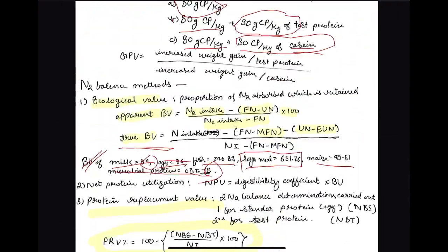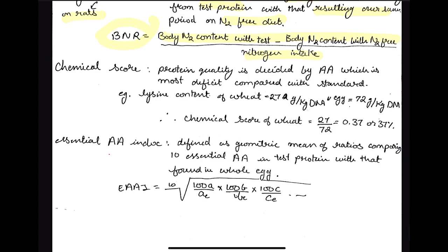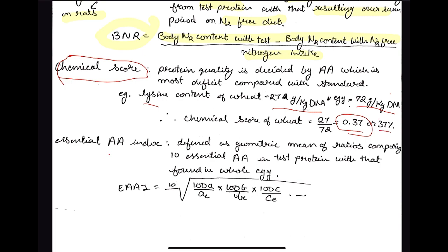Now for chemical evaluation methods. The first is Chemical Score, where we identify the amino acid most deficient compared with a standard. For example, the most deficient essential amino acid in wheat is lysine at 27 g/kg dry matter, while in egg it is 72 g/kg. Dividing 27 by 72 gives 0.37, meaning the chemical score of wheat is 37%. One disadvantage is that only one amino acid — the most deficient — is considered.